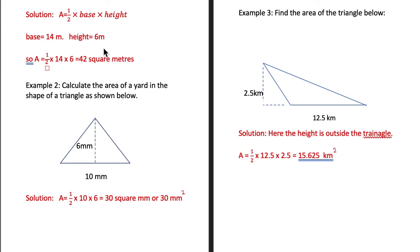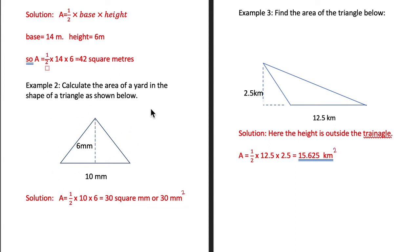Square meters because both the base and the height were given in meters. Example 2: calculate the area of a yard in the shape of a triangle as shown below. This is the yard they have given to us and we want to find its area. Here the height is this dotted line.